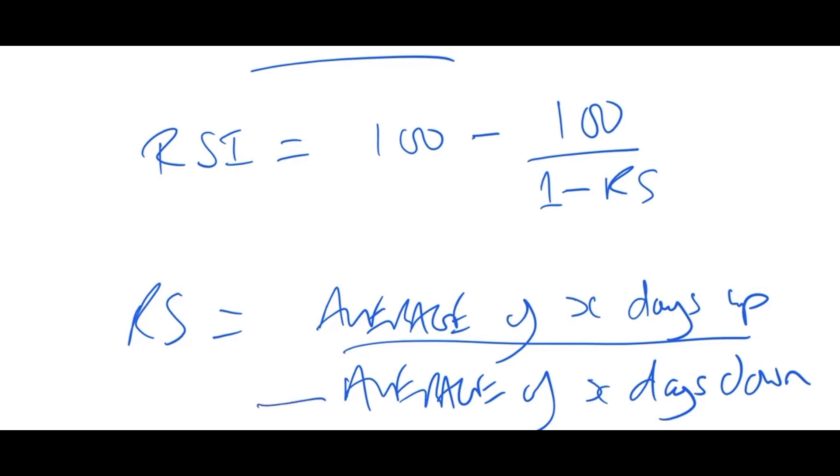And of course, the inverse applies down here. If out of the last 10 days, the market went down for four of them, the number of points lost in those four days are added up and divided by 10. And we end up with an average.